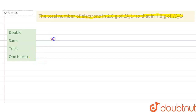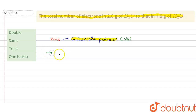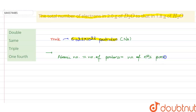First of all, we have to know what a mole is. A mole is the amount of material containing 6.023 multiplied by 10 to the power 23 particles, which is also called Avogadro's number, represented by N. In the neutral case, the atomic number is defined as the number of protons or the number of electrons present in an element.